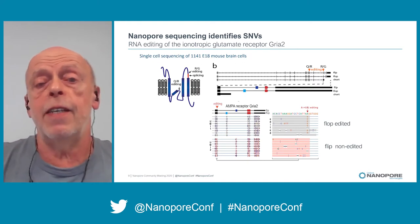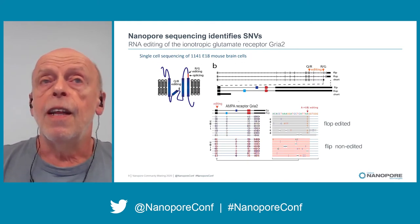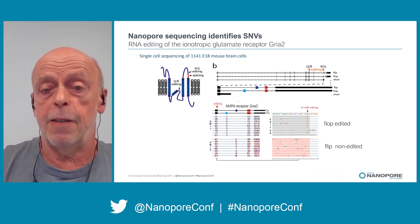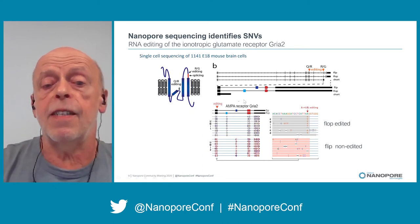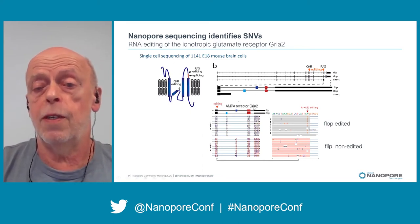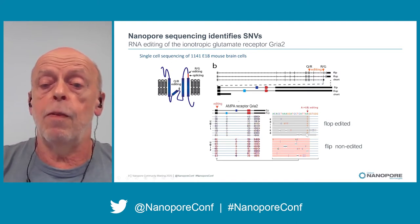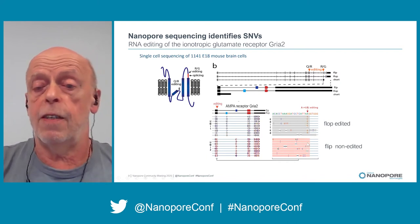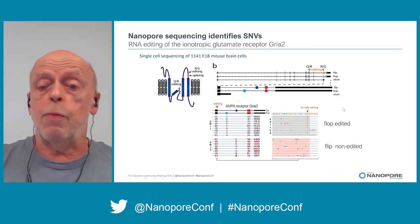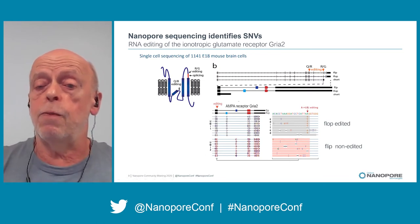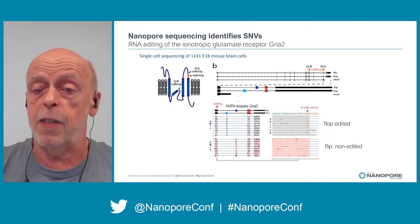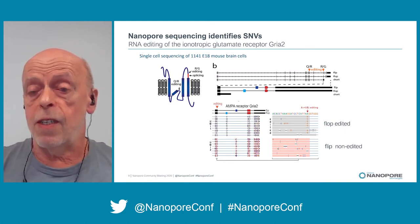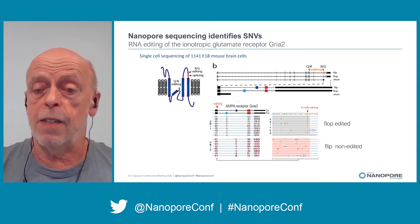Nanopore sequencing also allows you to identify single nucleotide variations. The main SNV found in mouse brain transcriptomes is editing. I show here one example: it's editing of the AMPA receptor GluR2. Those are two UMIs from the same cell — one is clearly edited and the one at the bottom is non-edited. Using UMIs makes it much clearer. If 10% of a transcript in a cell is edited and you see 10% mismatches in your reads, you always doubt sequencing errors. If you use UMIs, it gets clear.